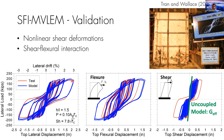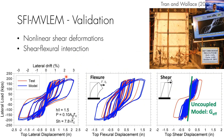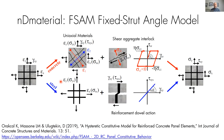Quick clarification on the plot colors: the test result is shown in red and the model prediction is shown in blue. The 2D material for reinforced concrete used in the SFI-MVLEM is called the Fixed Strut Angle Model, FSAM, also available in OpenSees.